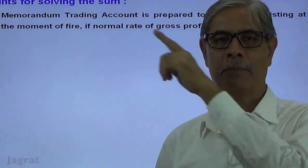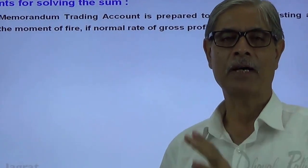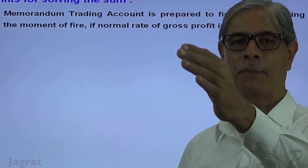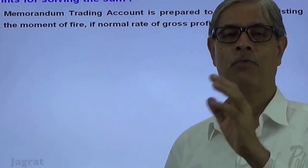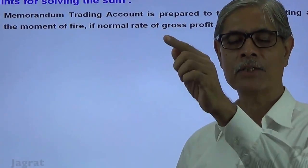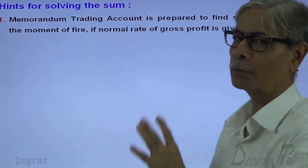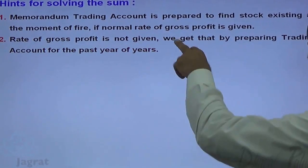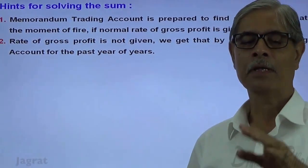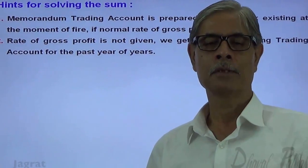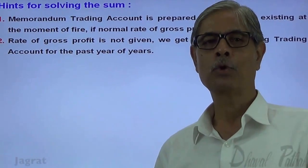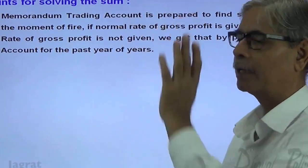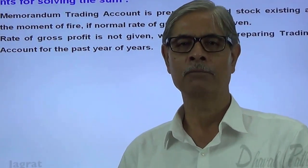A normal trading account is prepared for the whole year, whereas a memorandum trading account is prepared only till the date of fire. The purpose of the normal trading account is to find out the gross profit, while the purpose of the memorandum trading account is to find out the stock at the moment of fire. In the memorandum trading account, the normal rate of gross profit is applied. If it is not available, we get it by preparing the trading account for past years. If you prepare a trading account for more than one year in the past, you can find out the average rate of gross profit, and that average rate can be applied to the memorandum trading account prepared till the date of fire.